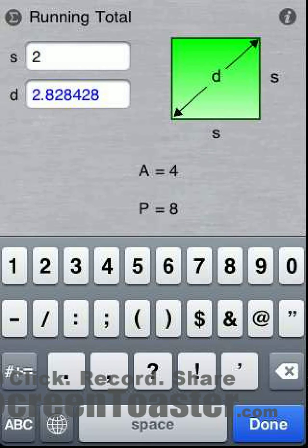Notice that the calculation was performed as soon as we entered the required number of inputs. Obviously, pressing a convert button is not necessary. Another feature seen here is the calculation of the diagonal length in addition to the area and perimeter.